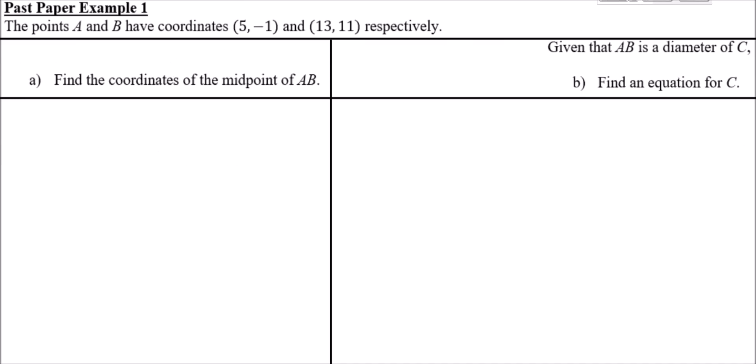Here's the first past paper example, which is rather easier — not easy, but not too bad. Points A and B have coordinates (5, -1) and (13, 11). First, we're asked to find the coordinates of the midpoint of AB. All we need to do is average the x-coordinates and the y-coordinates.